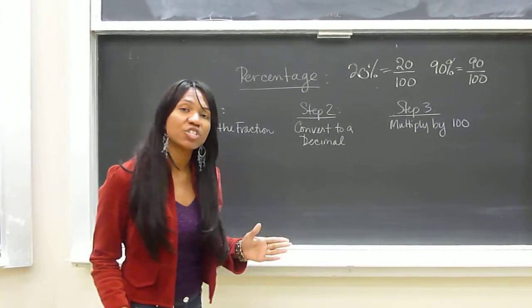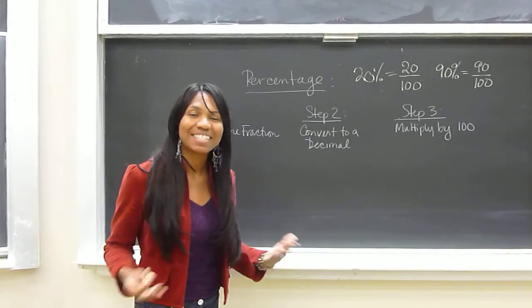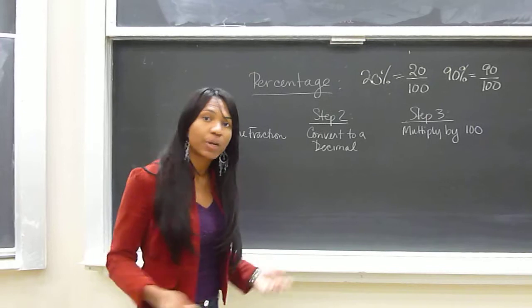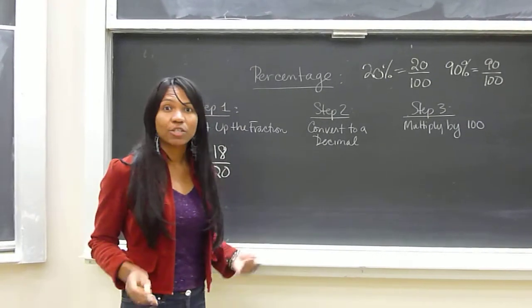18 is always the number that's a part of the entire amount. The entire amount in this case is 20. So our fraction would be 18 divided by 20.